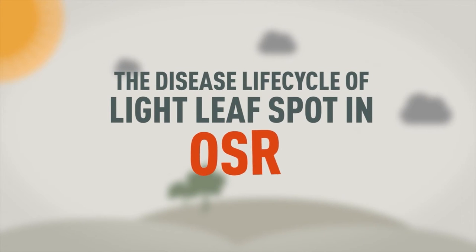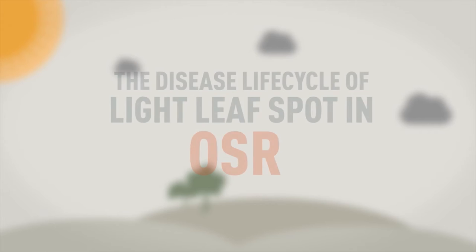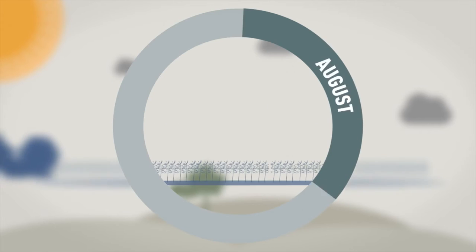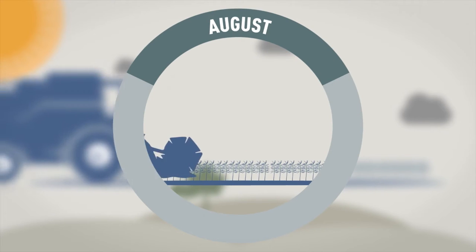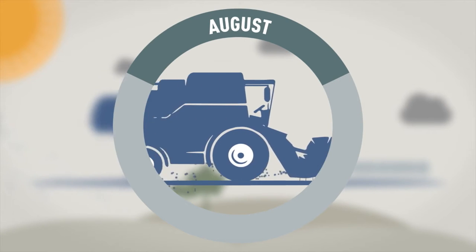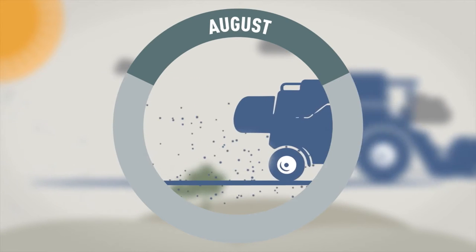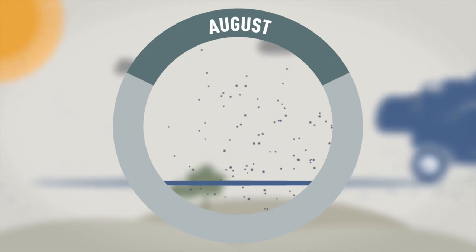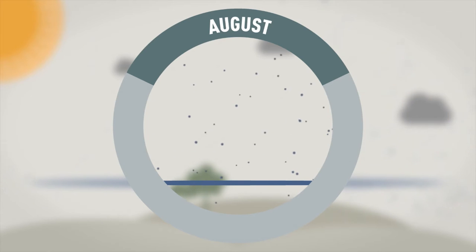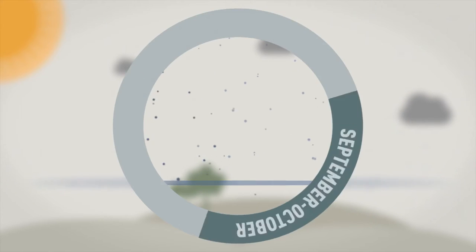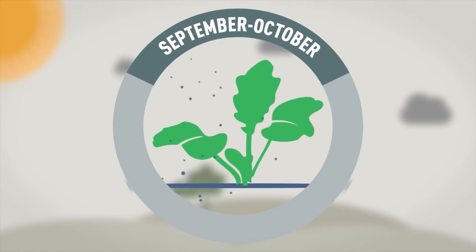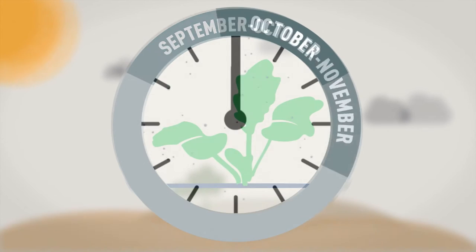The disease life cycle of lightleaf spot in oilseed rape. Ascospores from lightleaf spot infected pods and stems are released during harvest and from stubble debris. As new rape plants emerge, the young leaves are susceptible to infection from windblown ascospores.